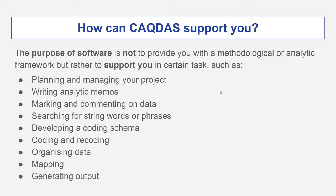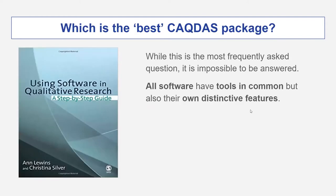How can CAQDAS support you? The purpose of the software is not to provide you with a methodological or analytic framework, but rather to support you in certain tasks, such as planning and managing your project, writing analytic memos, marking and commenting on data, searching for string words or phrases, developing a coding schema, coding and recording, organizing data, and mapping and generating output. Anne Lewins and Christina Silver wrote a highly recommended book entitled Using Software in Qualitative Research: A Step-by-Step Guide, presenting how to use different kinds of software.